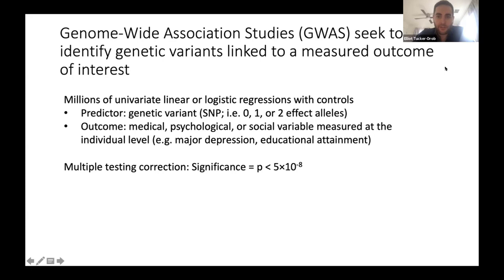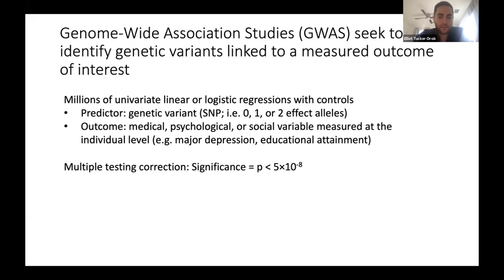For those who don't know, a genome-wide association study, or GWAS, is a series of univariate regressions with some control variables in which a key outcome is measured in a large group of people, and that outcome is predicted one at a time from each genetic variant — often SNPs, single nucleotide polymorphisms. It's done one at a time because you can't conduct a multiple regression with millions of predictors at once. It's hypothesis-free, searching for significant associations across the genome, with a very strict Bonferroni correction of 5 times 10 to the negative 8th power.